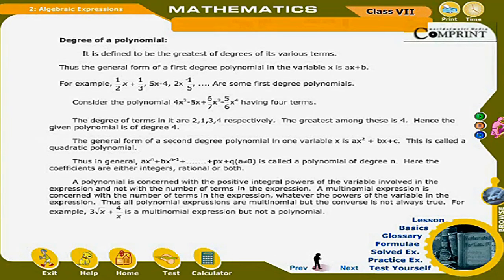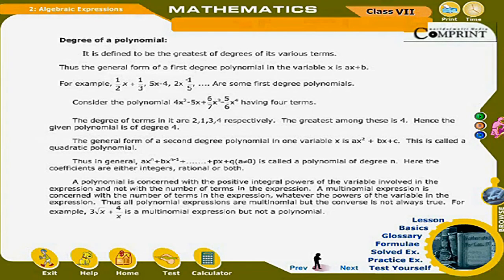The general form of a second degree polynomial in one variable x is ax² + bx + c, which is called a quadratic polynomial. In general, ax^n + bx^(n−1) + … + px + q, where a ≠ 0, is called a polynomial of degree n. The coefficients are either integers, rational, or both. A polynomial is concerned with the positive integral powers of the variable, not the number of terms, whereas a multinomial expression is concerned with the number of terms, whatever the powers of the variable.